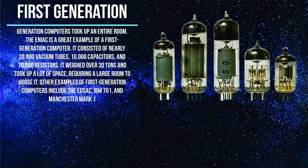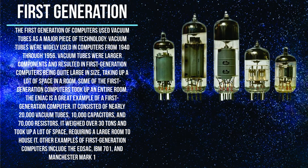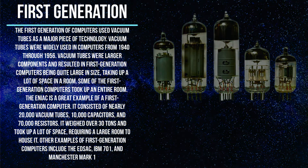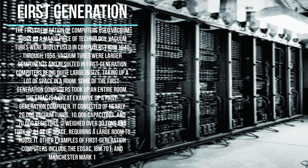The first generation of computers used vacuum tubes as a major piece of technology. Vacuum tubes were widely used in computers from 1940 through 1956. Vacuum tubes were larger components and resulted in first generation computers being quite large in size, taking up a lot of space in a room. Some of the first generation computers took up an entire room.